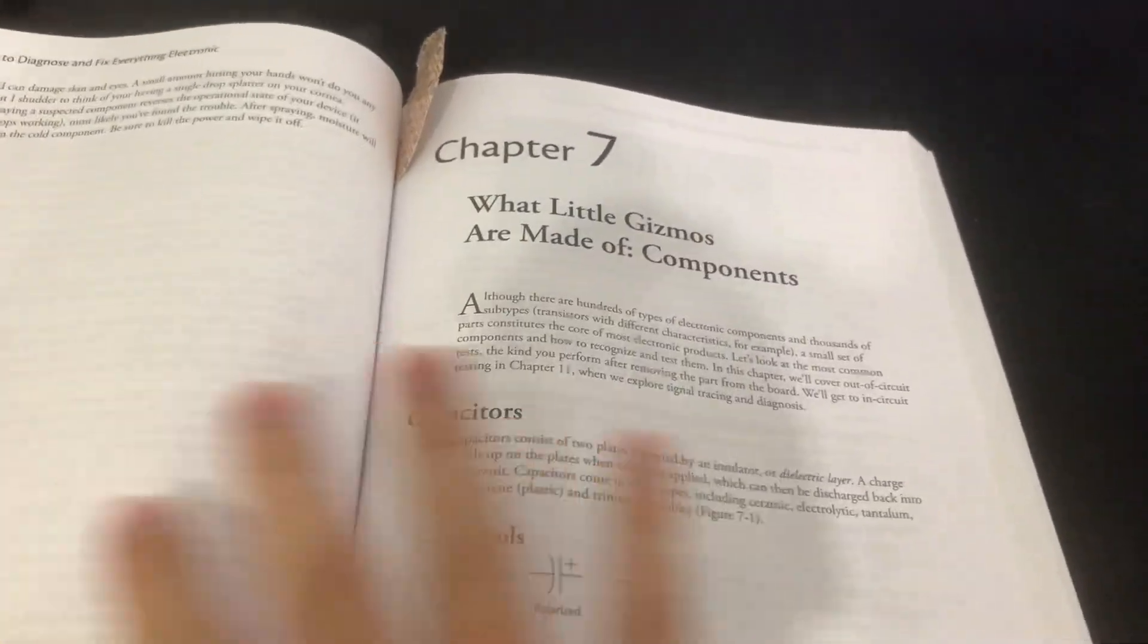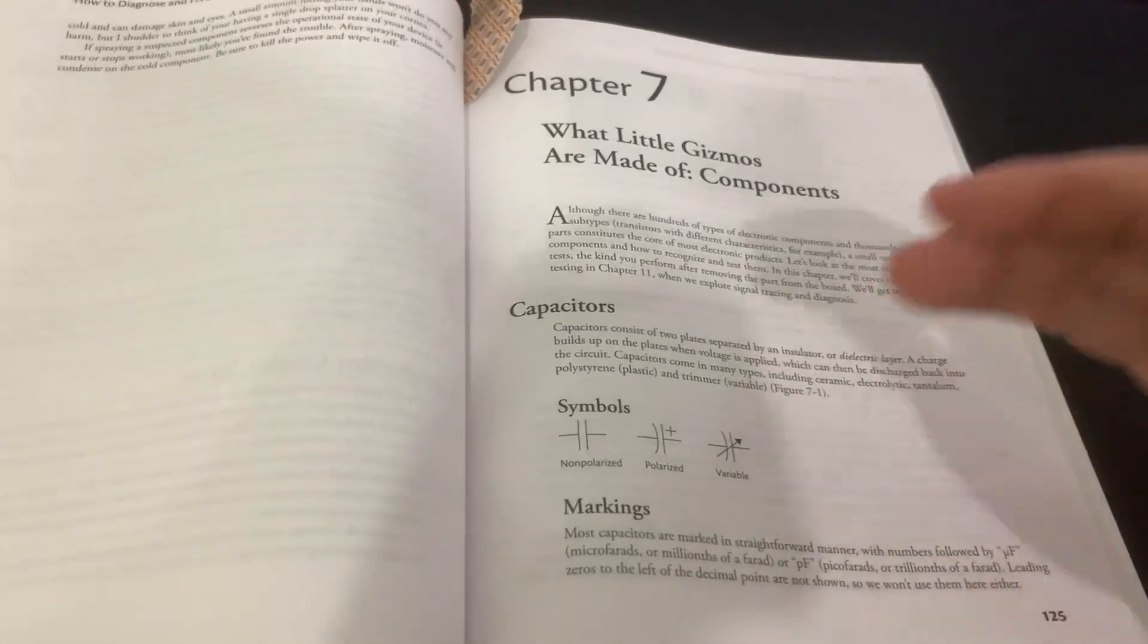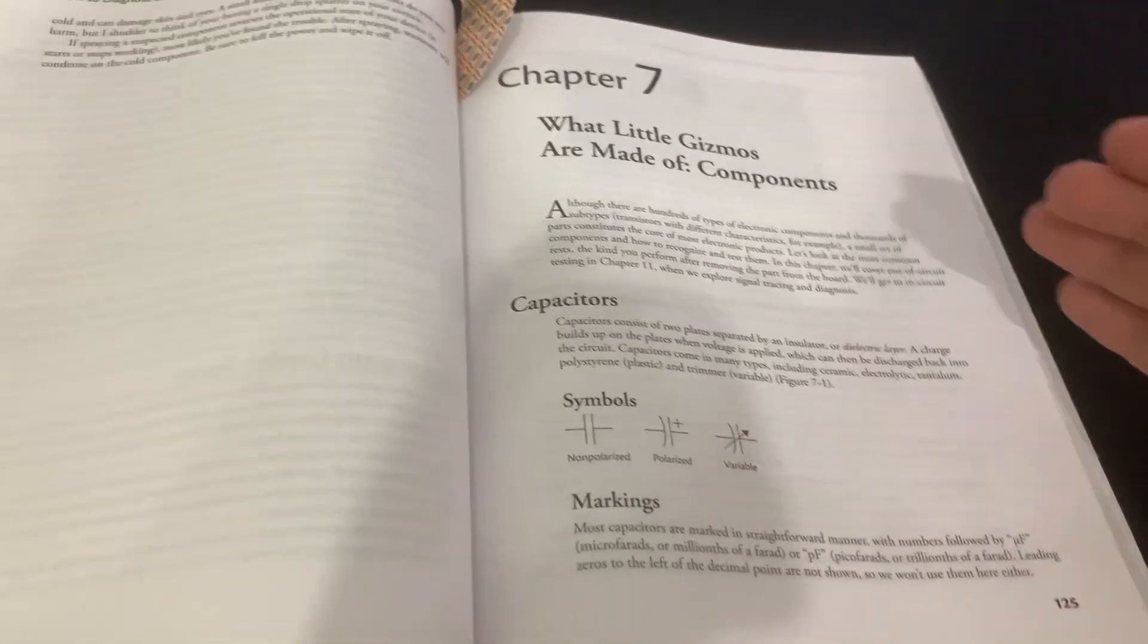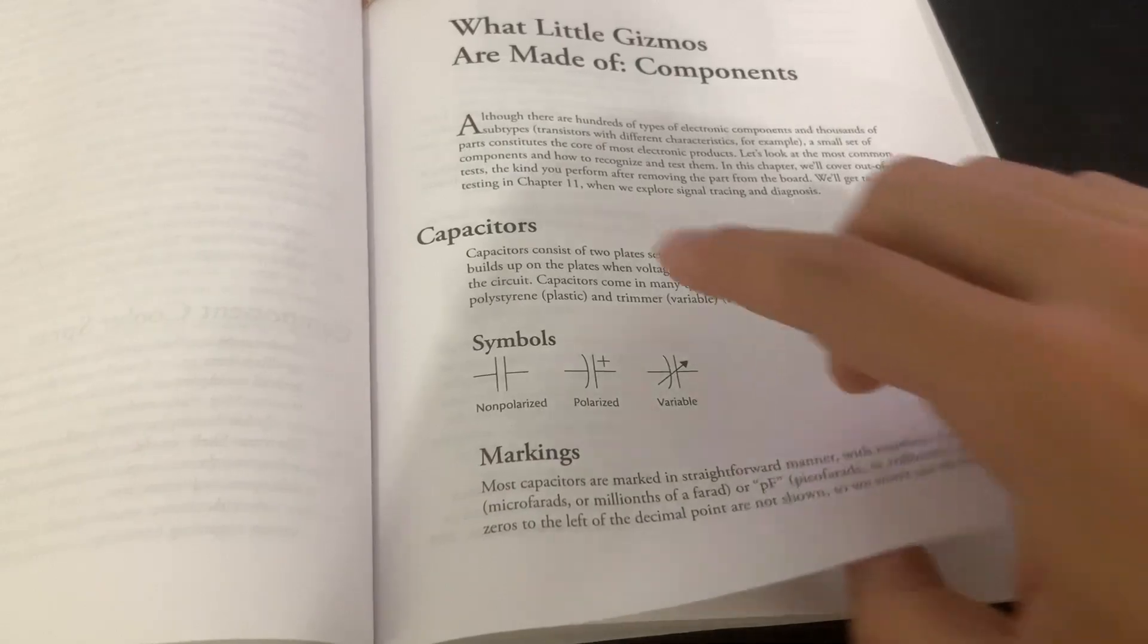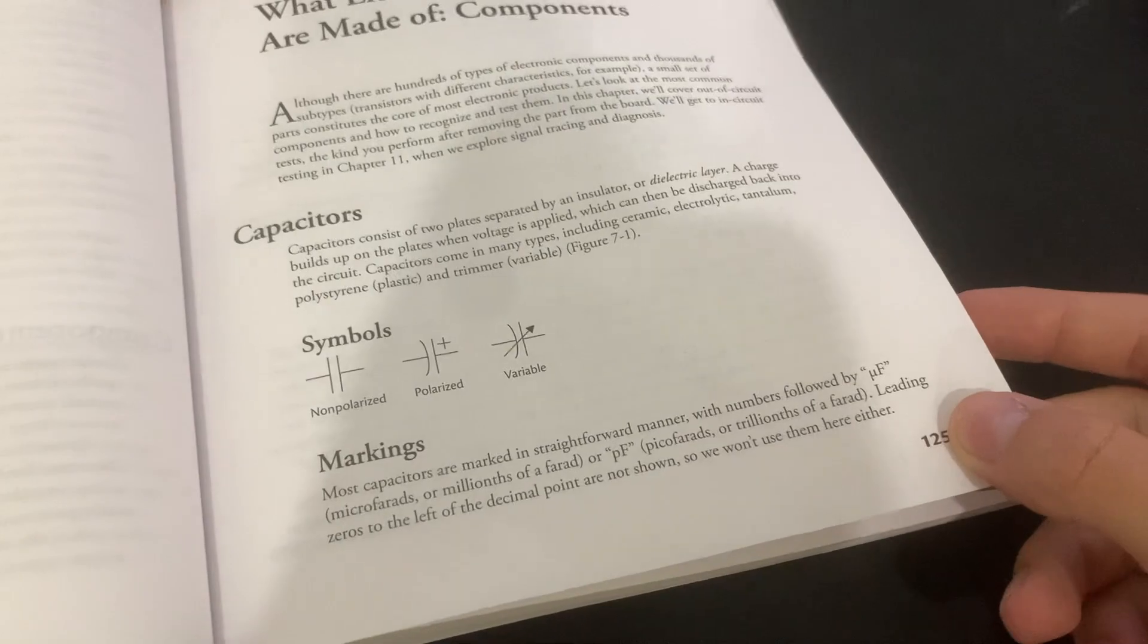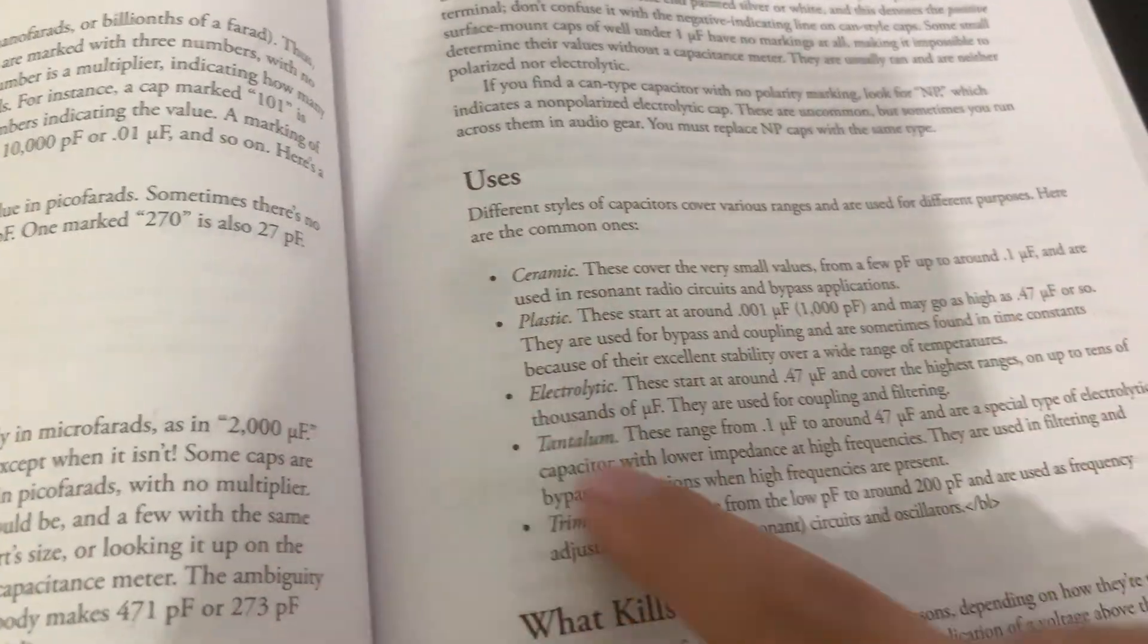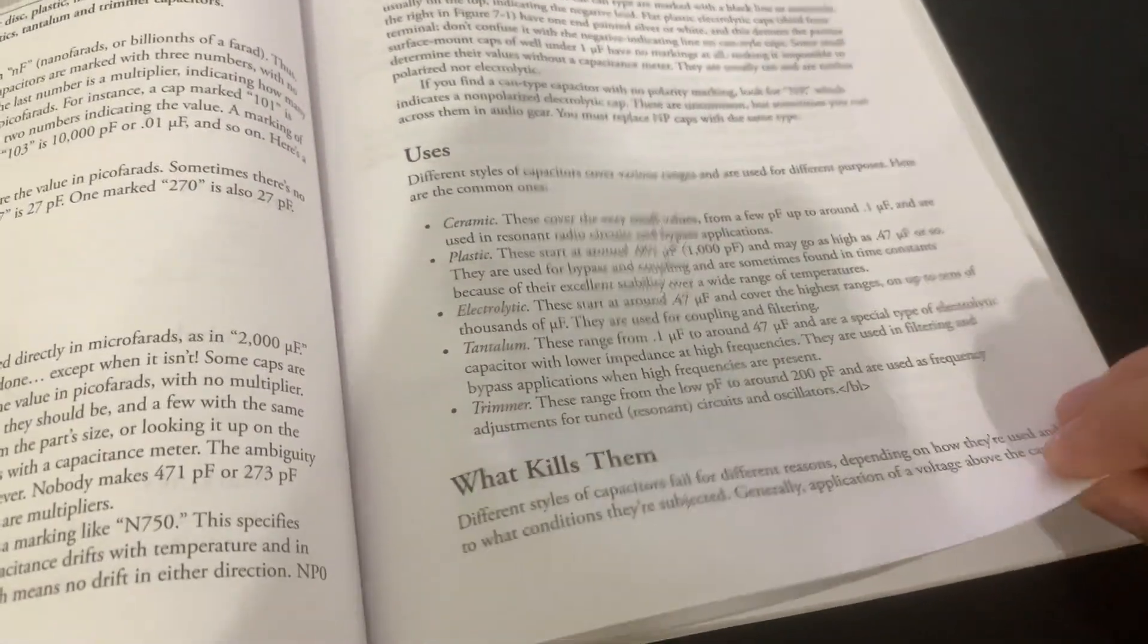We have here, for example, the capacitors. I can show you the electronic circuits and what usually breaks down the most. We have here the capacitors, the symbols, the markings that they can have to identify. You can see here the uses, what kills them.